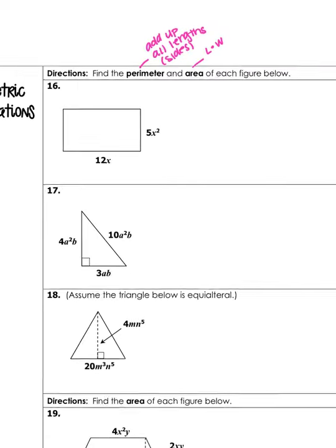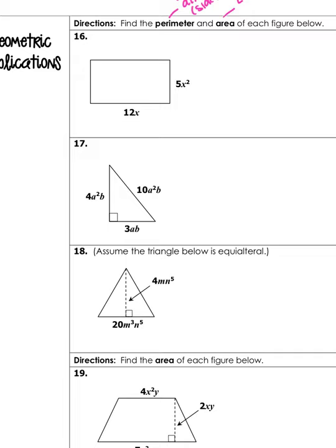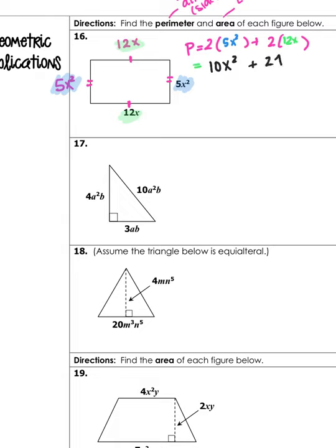For number sixteen, find the perimeter and area. In a rectangle, opposite sides are equal: if one side is 12x then the opposite is 12x, and if one side is 5x squared then the opposite is also 5x squared. For the perimeter, we have two 5x squareds and two 12xs: 2 times 5x squared plus 2 times 12x. Two times 5x squared makes 10x squared, and two times 12x makes 24x. Those are not like terms so they stay as 10x squared plus 24x.